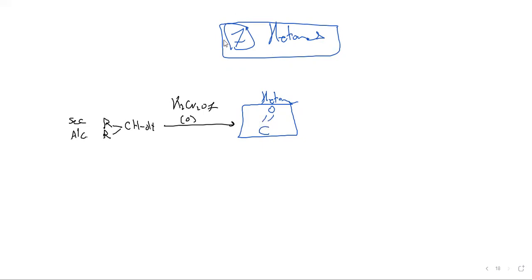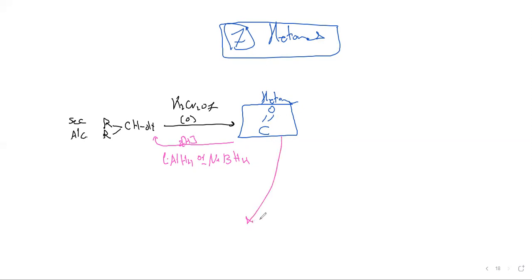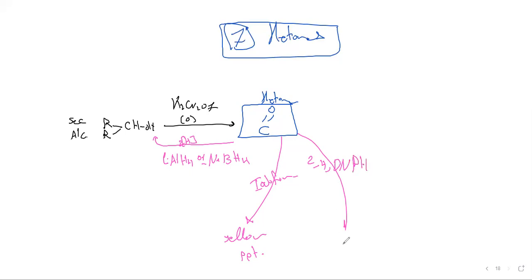Ketone can be returned back by reduction using LiAlH4 or NaBH4. For the reactions of ketones with iodoform it will form a yellow precipitate, and with 2,4-dinitrophenylhydrazine it will form an orange precipitate.